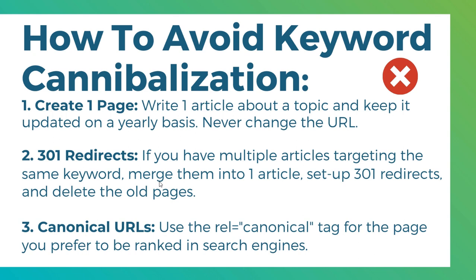What you want to do is find the page that is performing the best in Google search results — you can see that data in Google Analytics or Google Search Console. Then keep that article, take the other two articles you've written, and merge them all together into one large resource rather than three separate articles. It doesn't mean you're just copying and pasting each article — you want to merge that content as best as you possibly can for the people visiting your website.